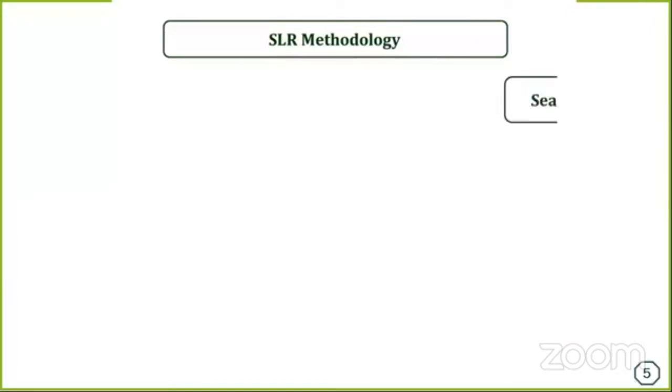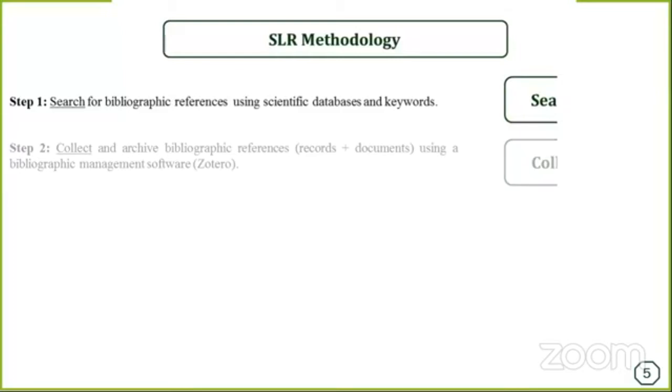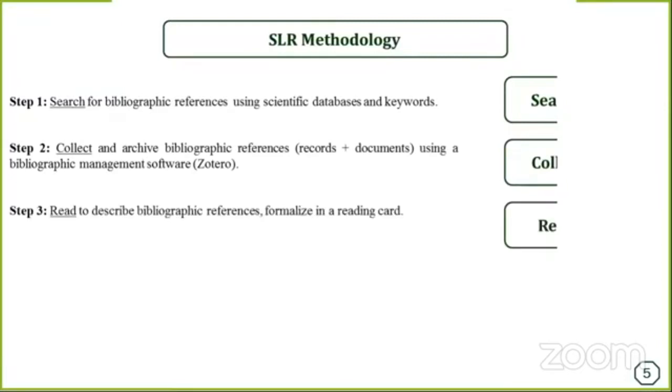Once we have specified our research question, we can start our systematic literature review. The first step is to search for bibliographic references using scientific databases to find published documents related to our topic. Once we have researched for references, we move to the next step: the collection of relevant references. We can use reference management tools like Zotero, which is easy and free. The third step is deep reading, where we take a careful look at what we have gathered to filter and remove documents that don't answer our questions and preserve the ones relevant to our research.